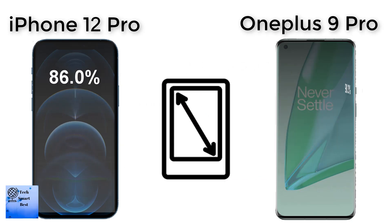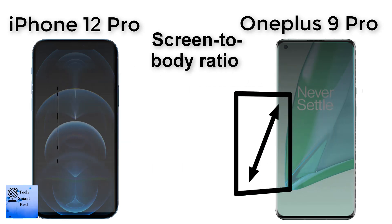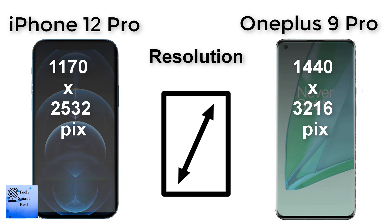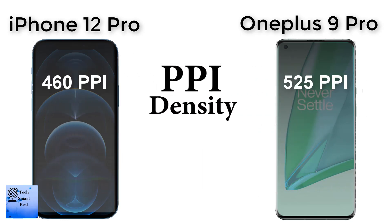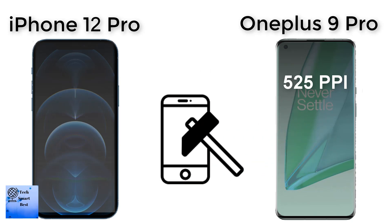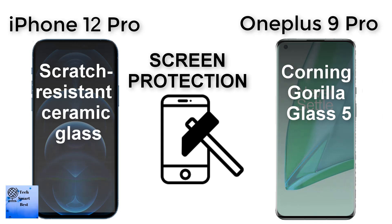The screen-to-body ratio of the OnePlus 9 Pro is 93.3%, and the screen-to-body ratio of the Apple iPhone 12 Pro is 86%. The resolution of the OnePlus 9 Pro is 1440 x 3260 pixels. The PPI density of the OnePlus 9 Pro is 525, and the PPI density of the Apple iPhone 12 Pro is 460. The display protection of the OnePlus 9 Pro is Corning Gorilla Glass 5, and the Apple iPhone 12 Pro has scratch-resistant ceramic graphics coating.